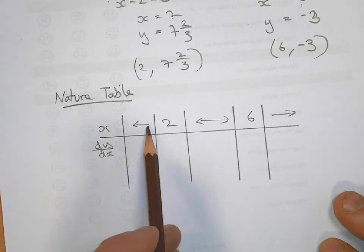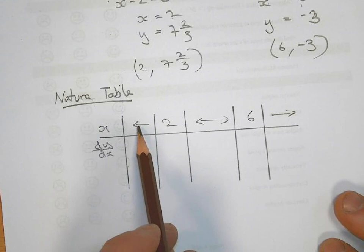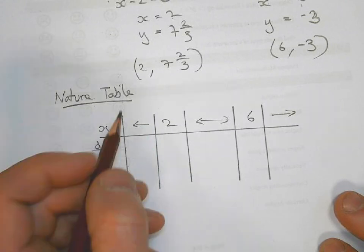So first of all, before 2, we could pick any number before 2. So we could pick 1.9, but the easiest one to use is 0. So I'm going to pick 0 there.